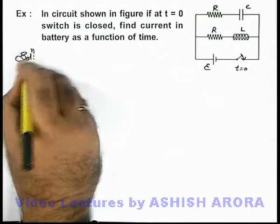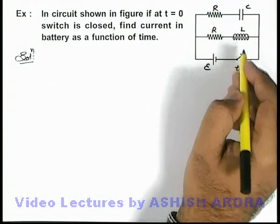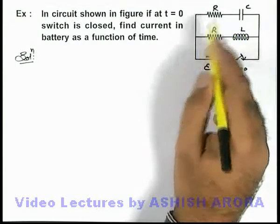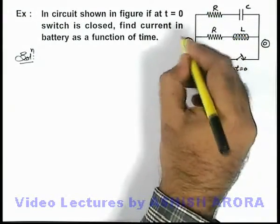In this situation we can see there is one RC branch and another is RL branch. As soon as we close down the switch, battery potential difference is applied across both the branches. If we consider on this side potential is zero, on this side it'll be E.